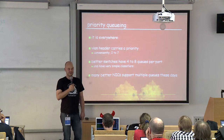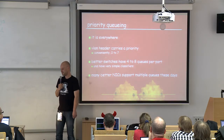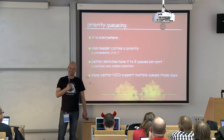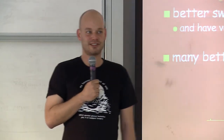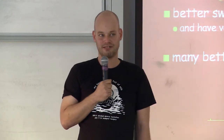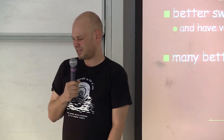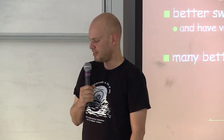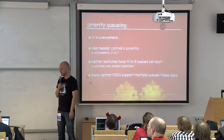Priority queuing happens to be everywhere. The VLAN header has a priority field — eight values, zero to seven. Better switches pretty much all have four or eight queues, typically eight, with built-in classifiers that are extremely simple and usually not good enough. Many high-end network interface cards these days have multiple send queues, so you can use hardware to split traffic apart — though I don't think we support that in any driver yet. Hardware makers usually sell this as a virtualization feature so each guest gets a separate queue.